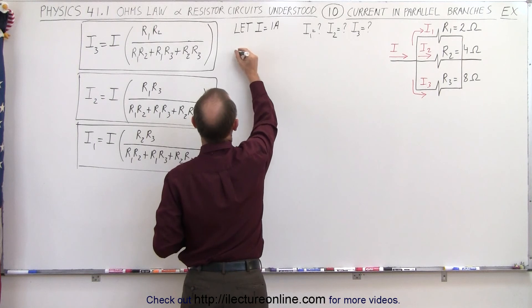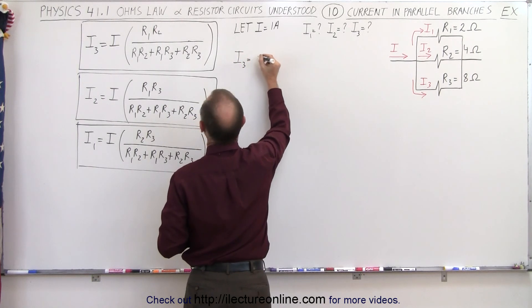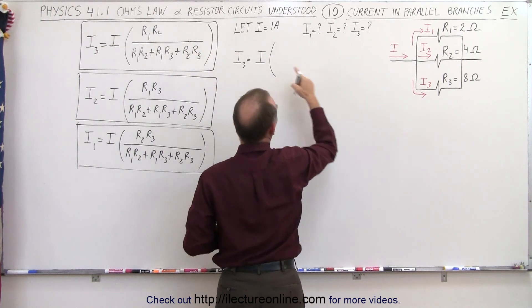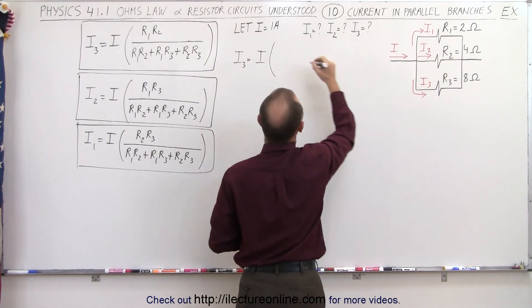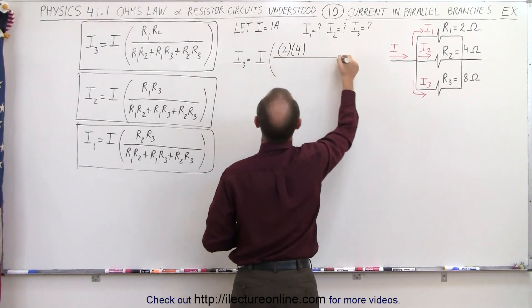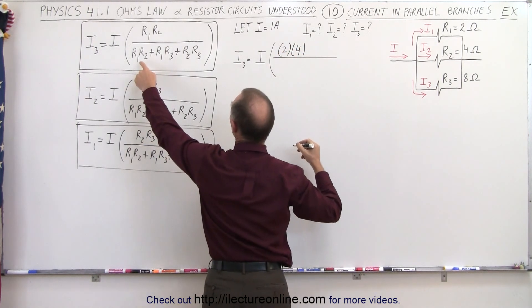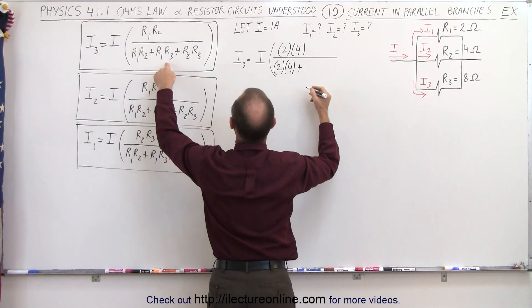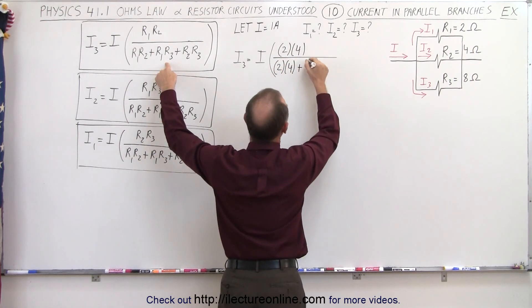Remember, I3 is going to be equal to I times the product of R1 times R2, which is 2 times 4. And divide that by what we have in the denominator, R1 times R2, which is 2 times 4, plus R1 times R3, which is 2 times 8.